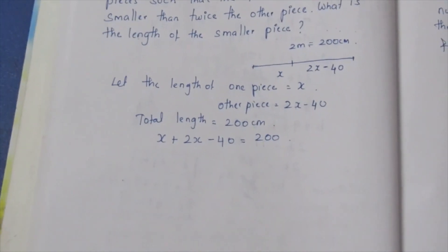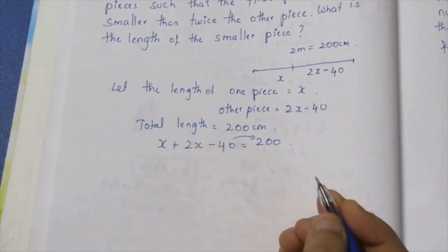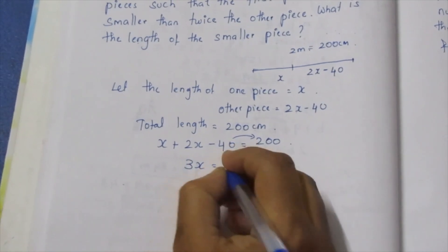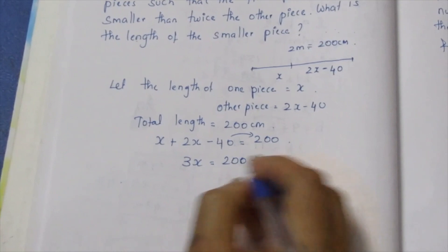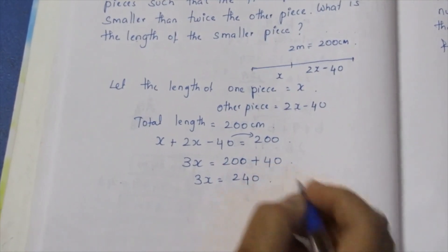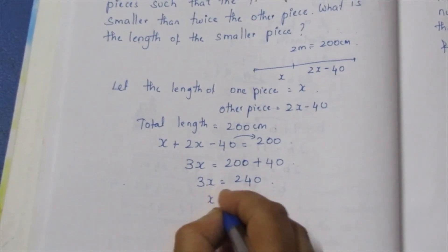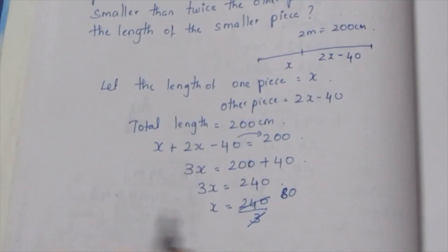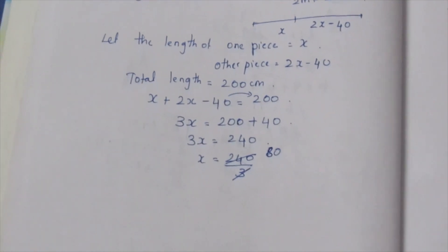Now, moving 40 to the other side, it becomes positive. So x plus 2x gives 3x, equal to 200 plus 40. So 3x equals 240. Now x equals 240 divided by 3. Dividing, 3 eights are 24, so x equals 80cm.